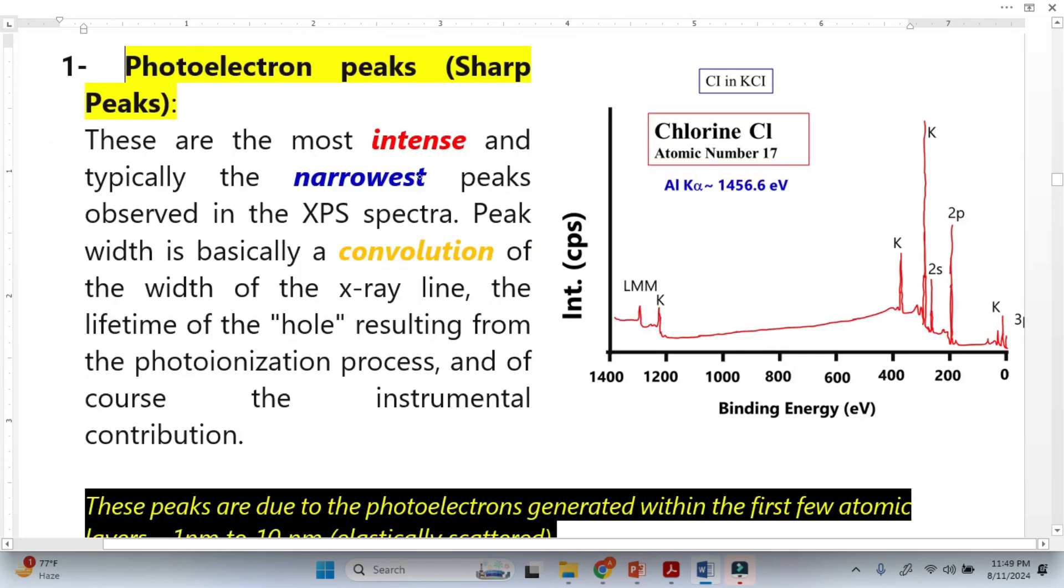So how we will recognize the photoelectron peaks? Photoelectron peaks are also called sharp peaks. Once we see sharp peaks, this means that this will be from photoelectrons here. If you look into the Auger peaks, the Auger peaks are not sharp. So this is the first sign that when we see sharp peaks, this means it will be from photoelectrons.